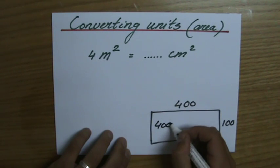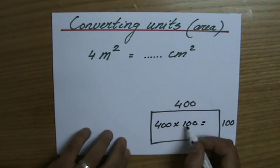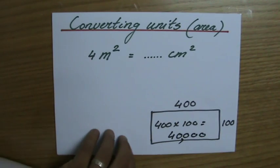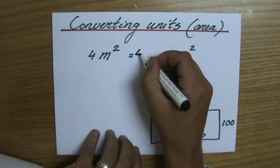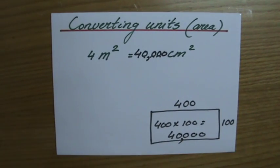So 400 times 100, and that equals 4 times 1 and four of those zeros: 40,000 square centimeters. So that's a lot more than 400, and like some of you might have said, it's 40,000 square centimeters.